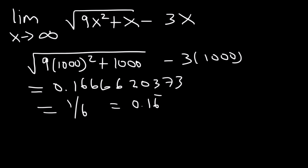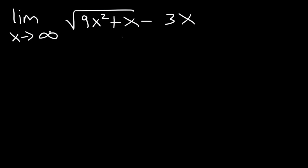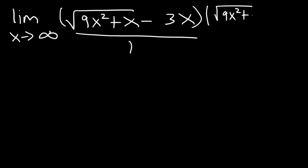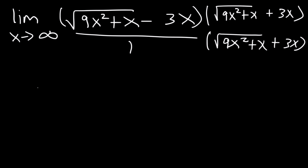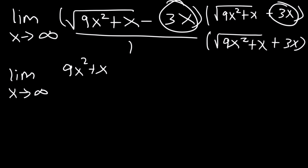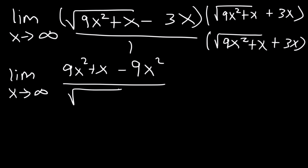But what technique can we use to actually get that answer? The first thing you should do is write this as a fraction over 1, then multiply the top and the bottom by the conjugate, which is the square root of 9x squared plus x plus 3x. When we FOIL the binomials on top, the two middle terms will cancel. So what we have is the limit as x approaches infinity of 9x squared plus x — the square roots cancel — minus 9x squared, divided by what we have on the bottom. These two add up to 9x squared so we can cancel.